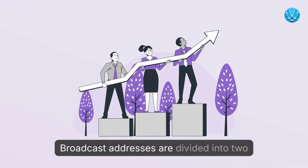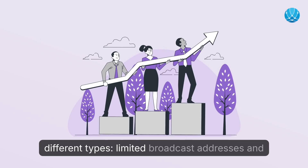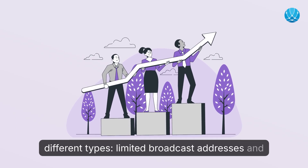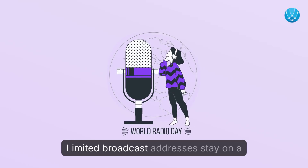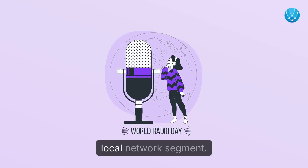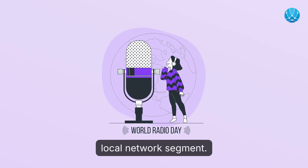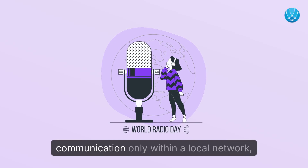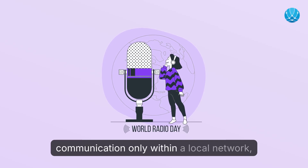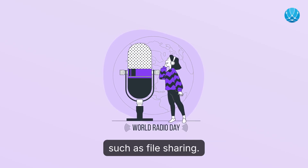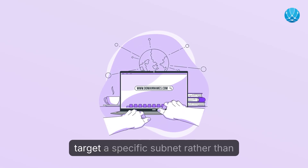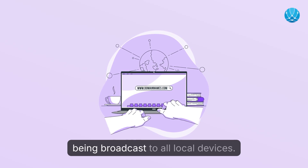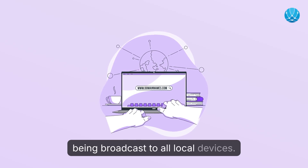Broadcast addresses are divided into two types: limited broadcast addresses and directed broadcast addresses. Limited broadcast addresses stay on a local network segment, useful for tasks like file sharing. Directed broadcast IPs extend beyond a single network segment and target a specific subnet rather than all local devices.